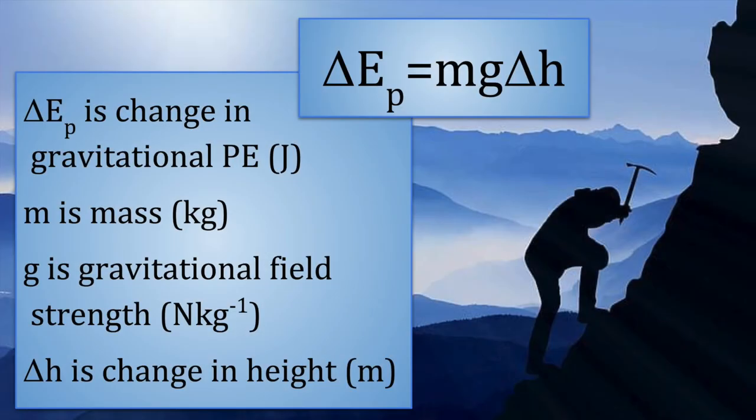Here is the formula we use to calculate gravitational potential energy near the surface of the Earth, where the strength of the gravitational field does not change.